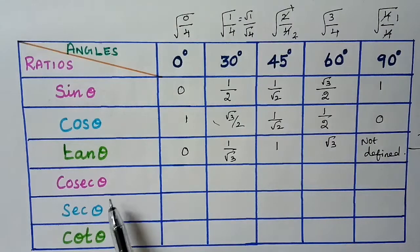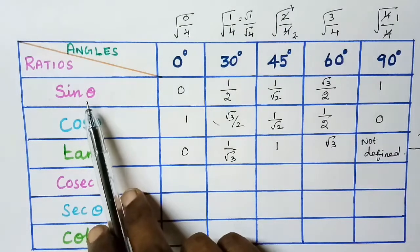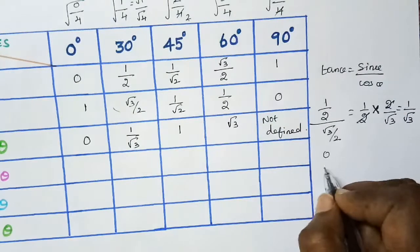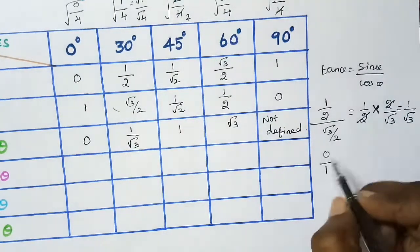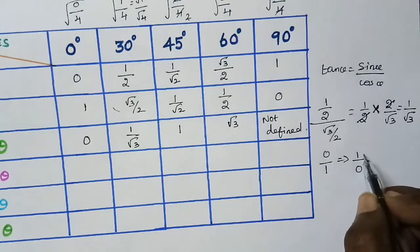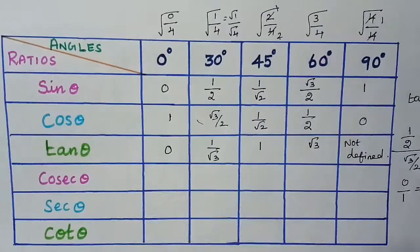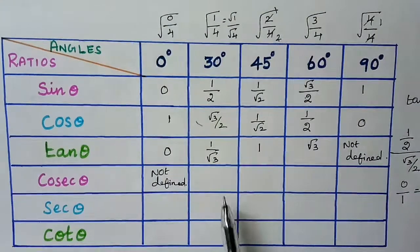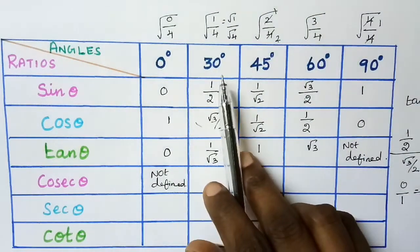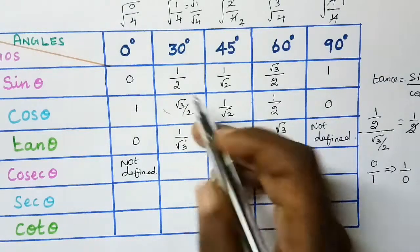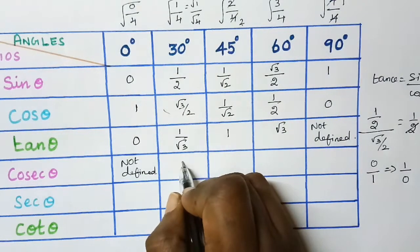Next we are going to find out cosecant theta. Cosecant theta is the reciprocal of sin theta. Sin 0 degree is 0, written as 0 by 1, so the reciprocal is 1 by 0, which is not defined. Sin 30 degree is 1 by 2, so the reciprocal is 2 by 1, which is 2.